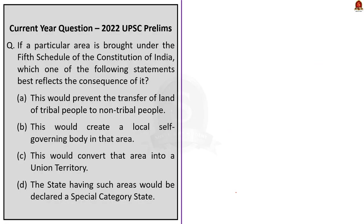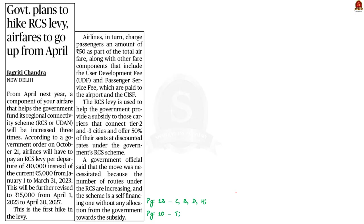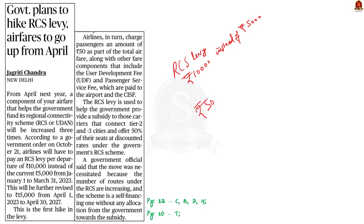Recently, in an order, the union government announced that airlines will have to pay a Regional Connectivity Scheme levy of Rs. 10,000 per departure instead of the earlier Rs. 5,000 from January 1. Airlines in turn charge passengers an additional amount of Rs. 50 as part of their total airfare. In this context, let's learn about the Regional Connectivity Scheme, popularly known as UDAN.